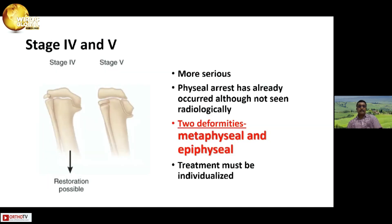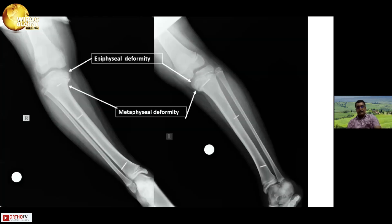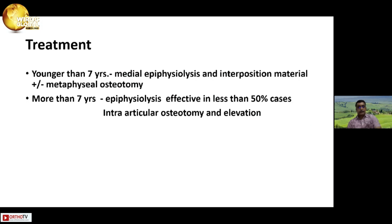Stages 4 and 5 are more serious. Physeal arrest has already occurred, although it may not be seen radiologically. We must understand that there are two deformities — metaphyseal and intra-articular — and treatment must be individualized. For patients less than 7 years of age, what is recommended is medial epiphysiodesis and interposition material, plus or minus metaphyseal osteotomy. But many of these patients present at more than 7 years of age, so epiphysiodesis is less effective and intra-articular osteotomy with elevation is recommended.